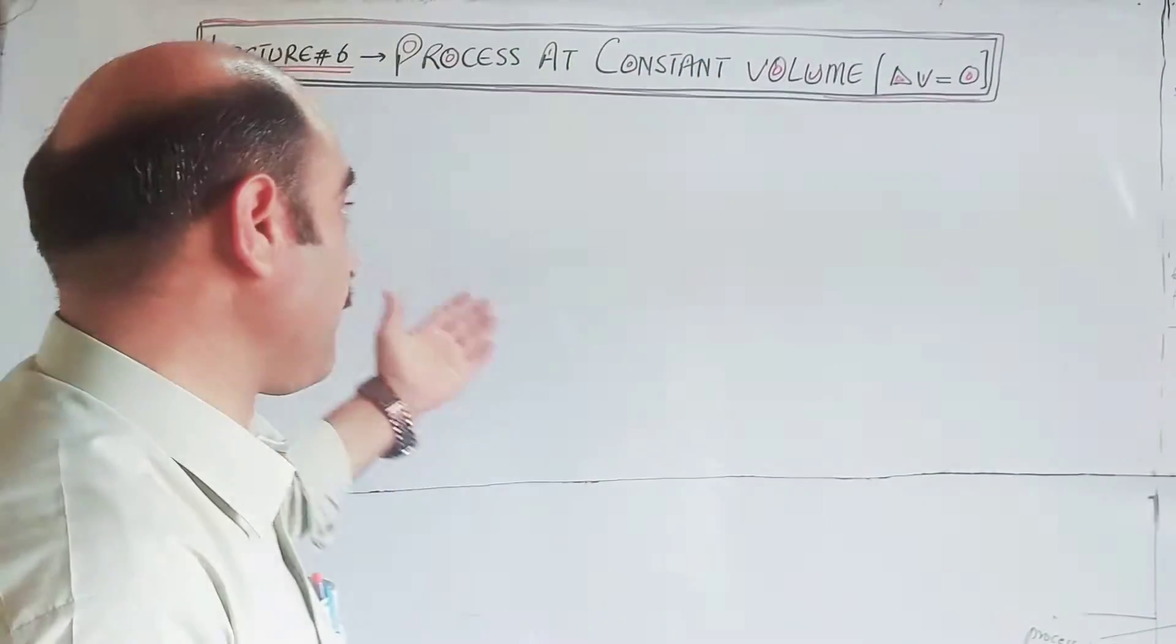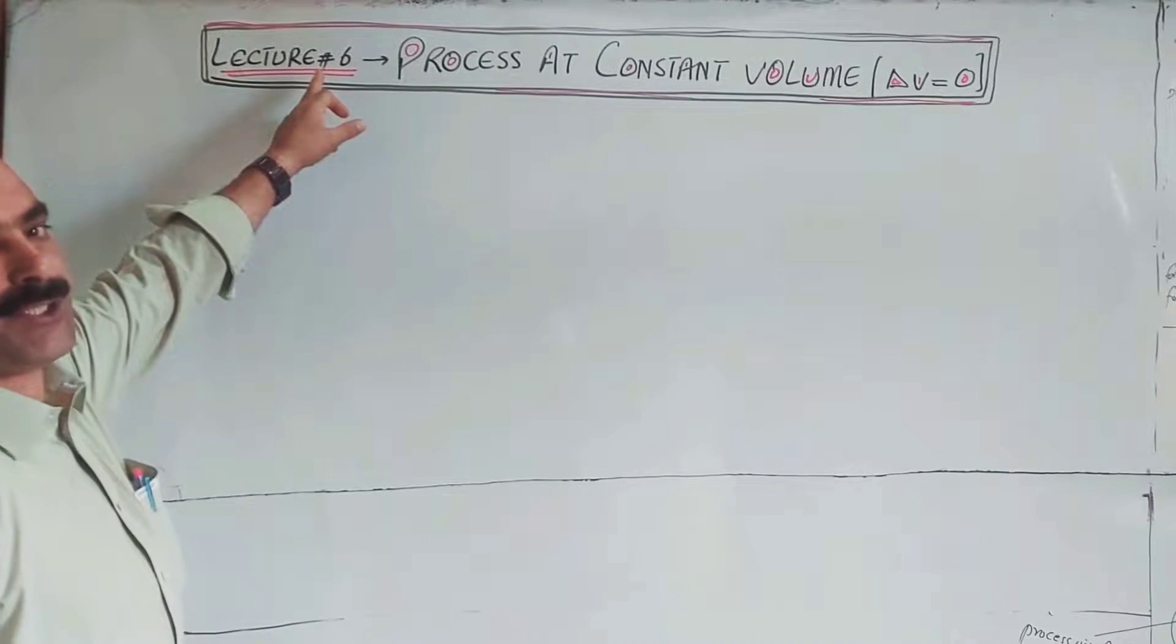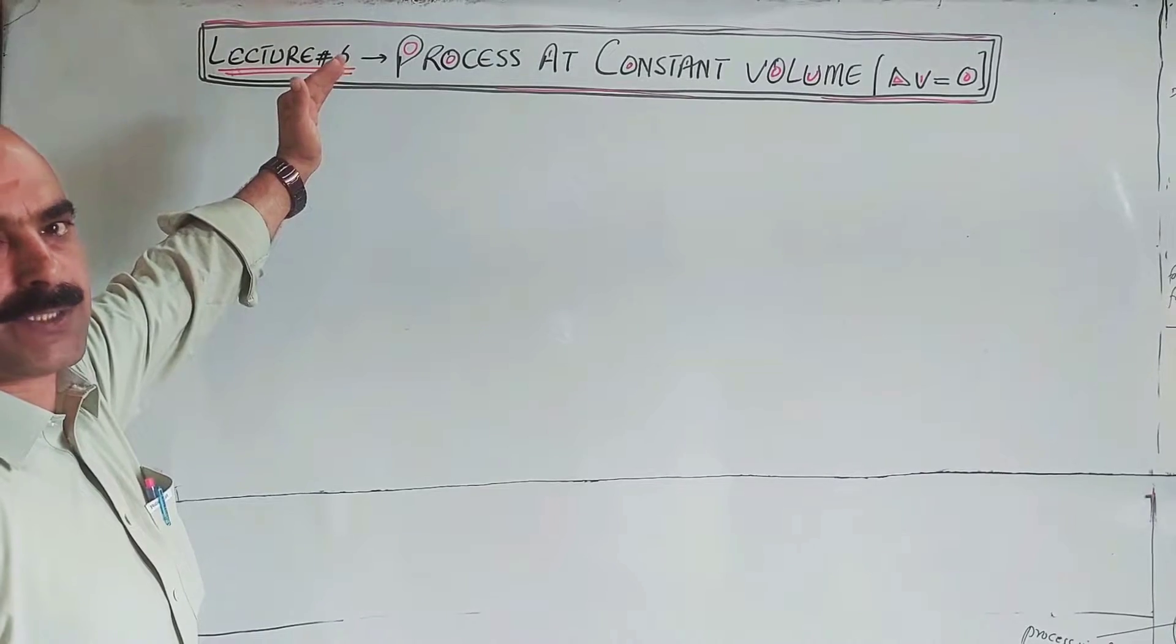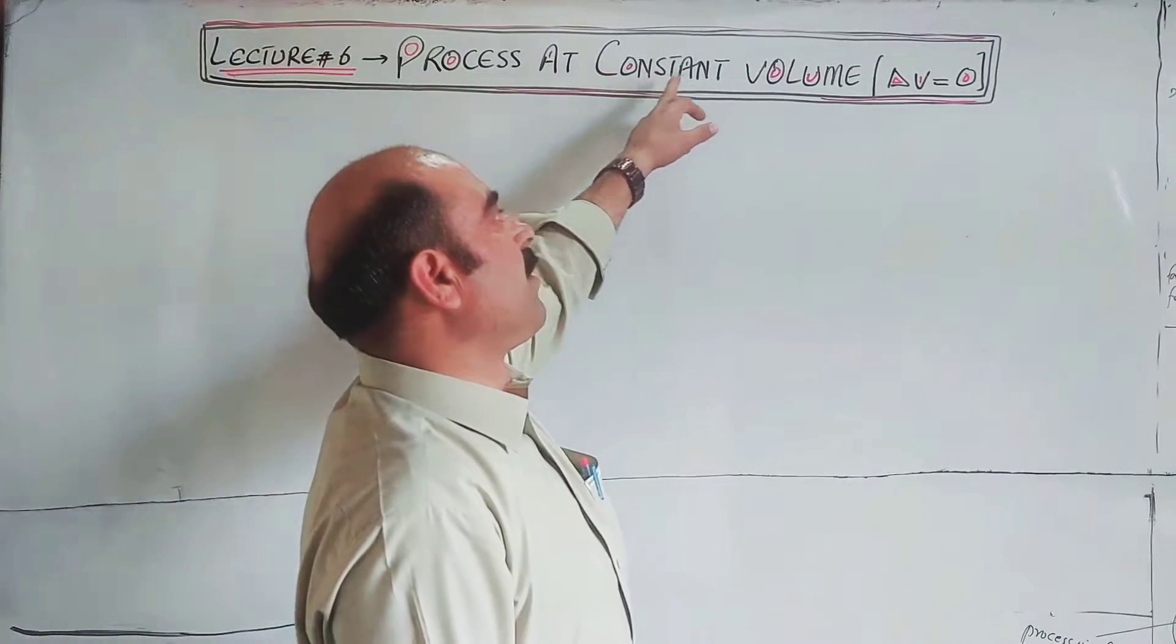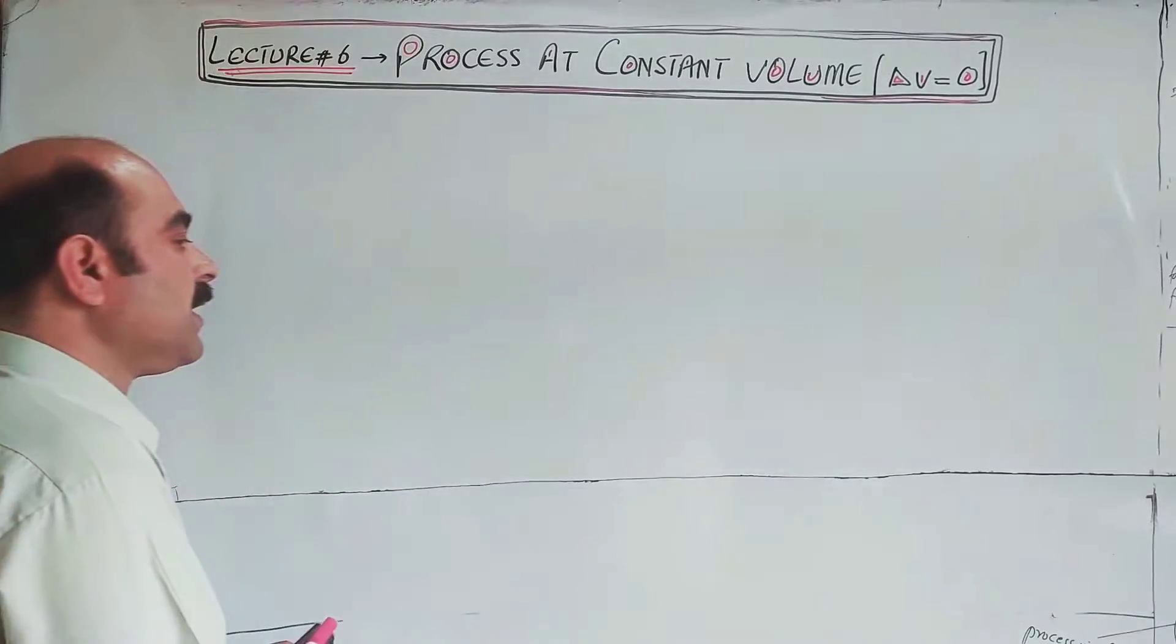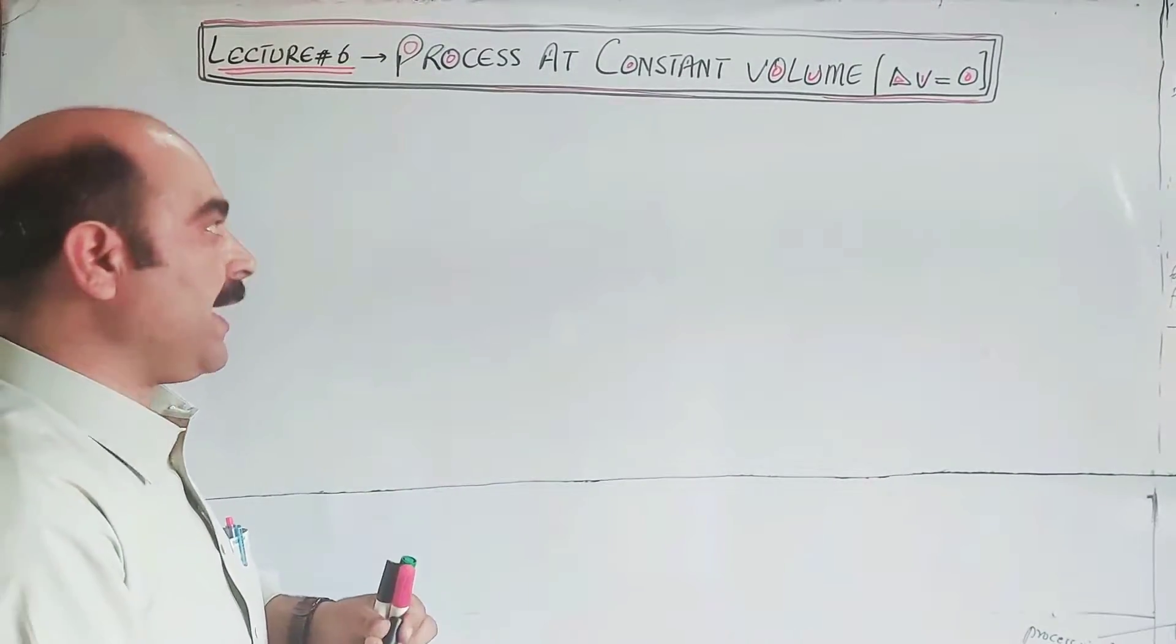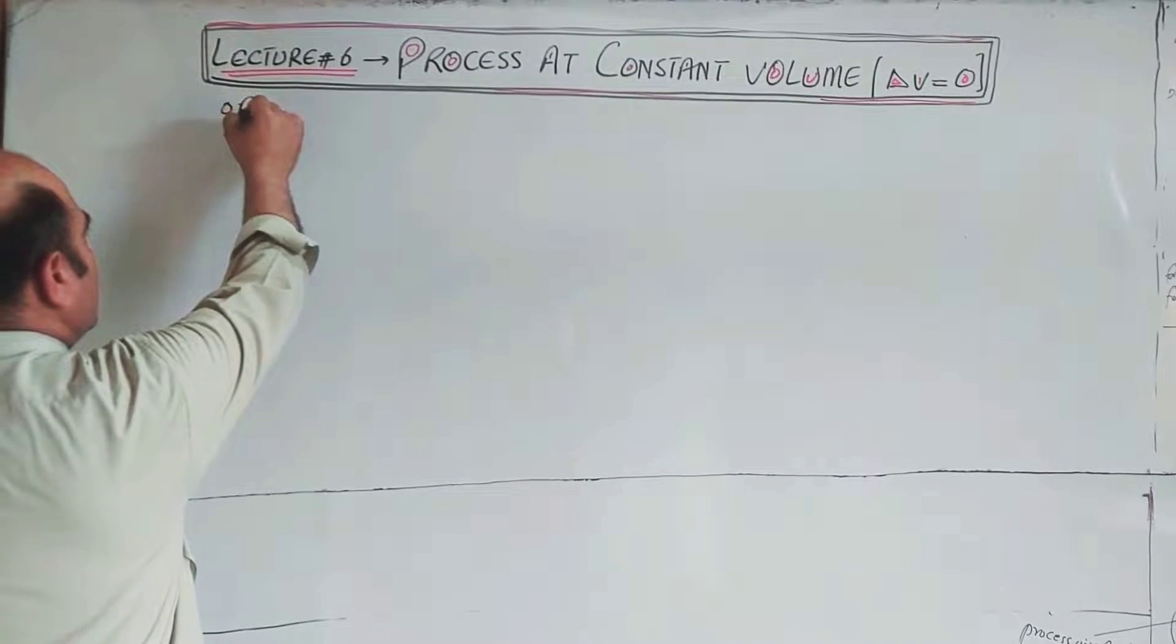The topic heading: lecture number six, chapter number eleven, thermochemistry, class first year, process carried out at constant volume. Delta V is equal to zero. We will prove this equation.